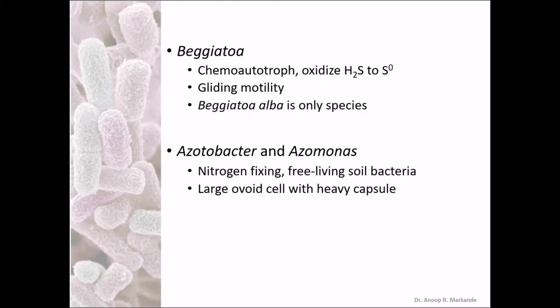Beggiatoa is a chemoautotroph which oxidizes H2S to sulfur. It shows gliding motility. Beggiatoa alba is the only species known in this group. Azotobacter and Azomonas — as the name says, they are both related to nitrogen. Both are nitrogen-fixing, free-living soil bacteria. The structure is large and ovoid with a heavy capsule.